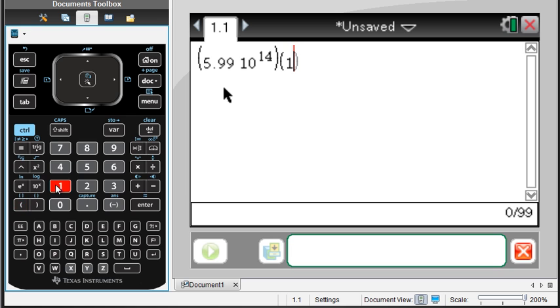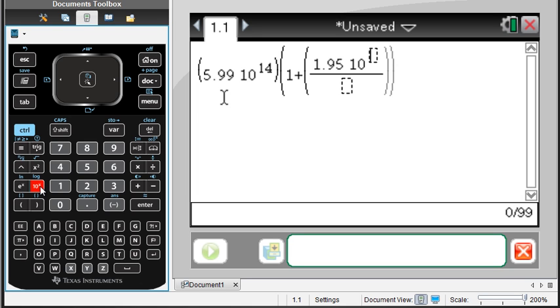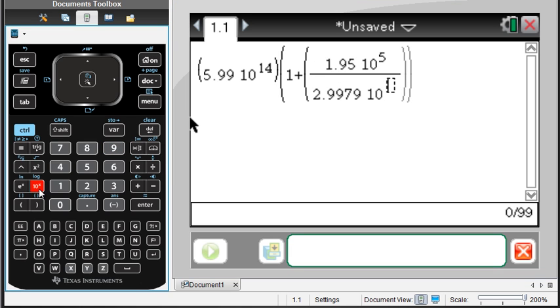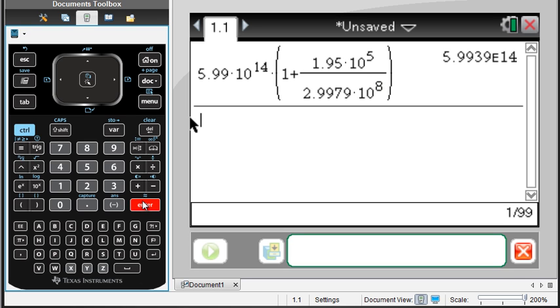times 1 plus 1.95 times 10 to the 5th meters per second divided by speed of light, 2.9979 to the 8th. And that is going to give us 5.9939 times 10 to the 14th hertz.